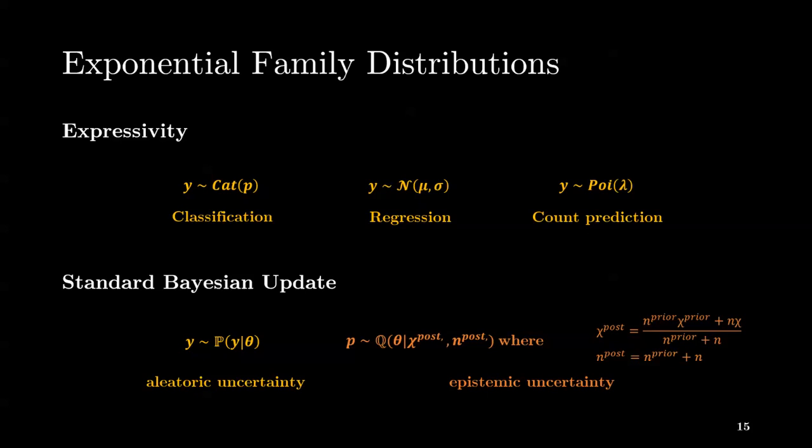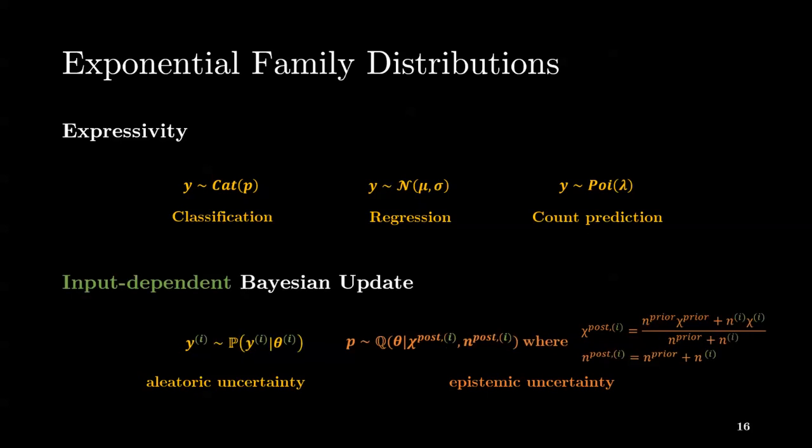In this work, we extend the standard Bayesian update to an input-dependent Bayesian update for any supervised learning task where the target output can be described by an exponential family distribution. To this end, the key idea of Natural Posterior Network is to produce a different parameter update for every single input.